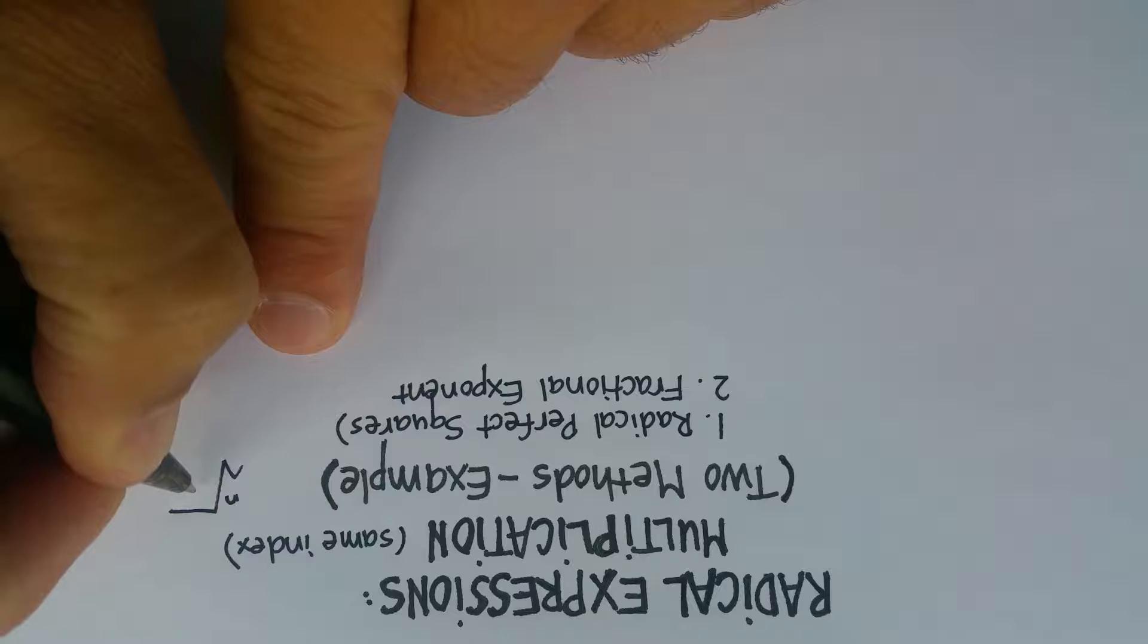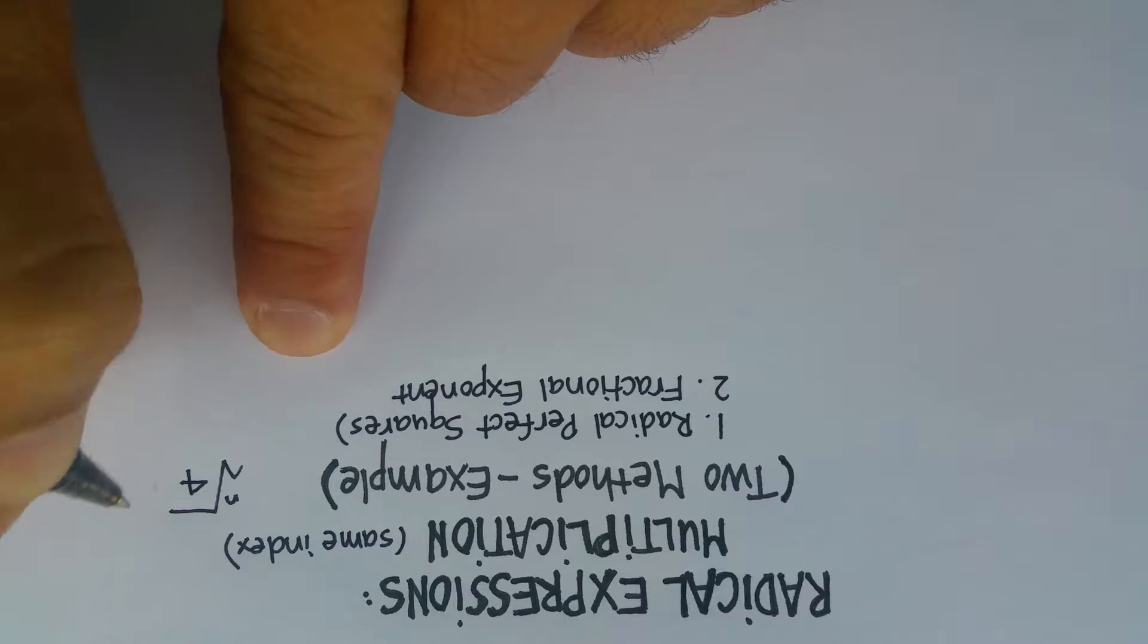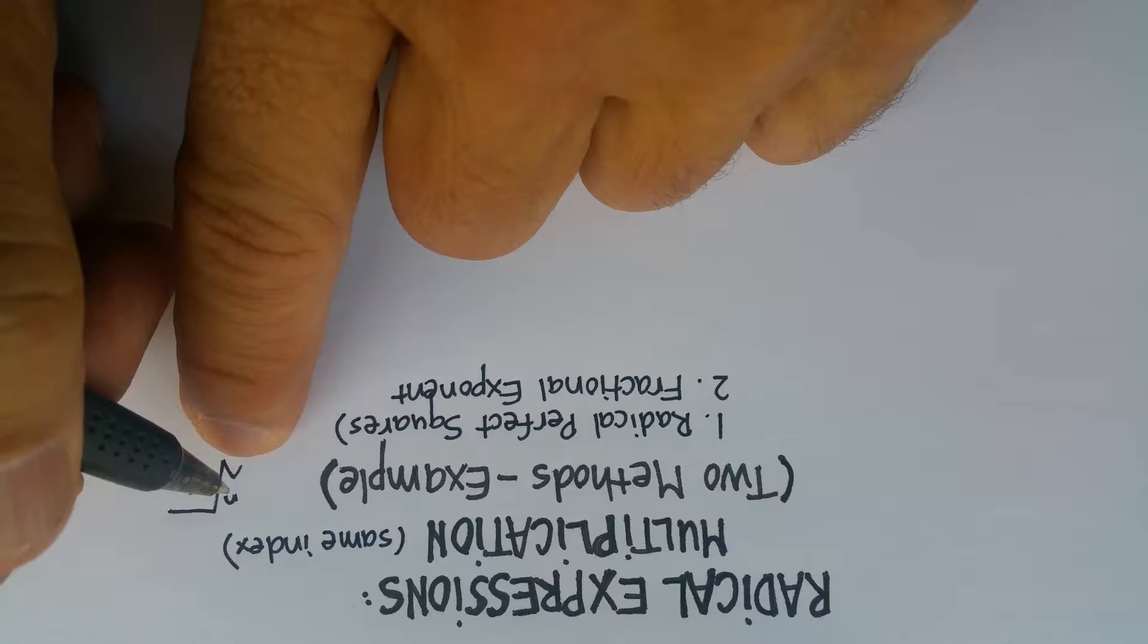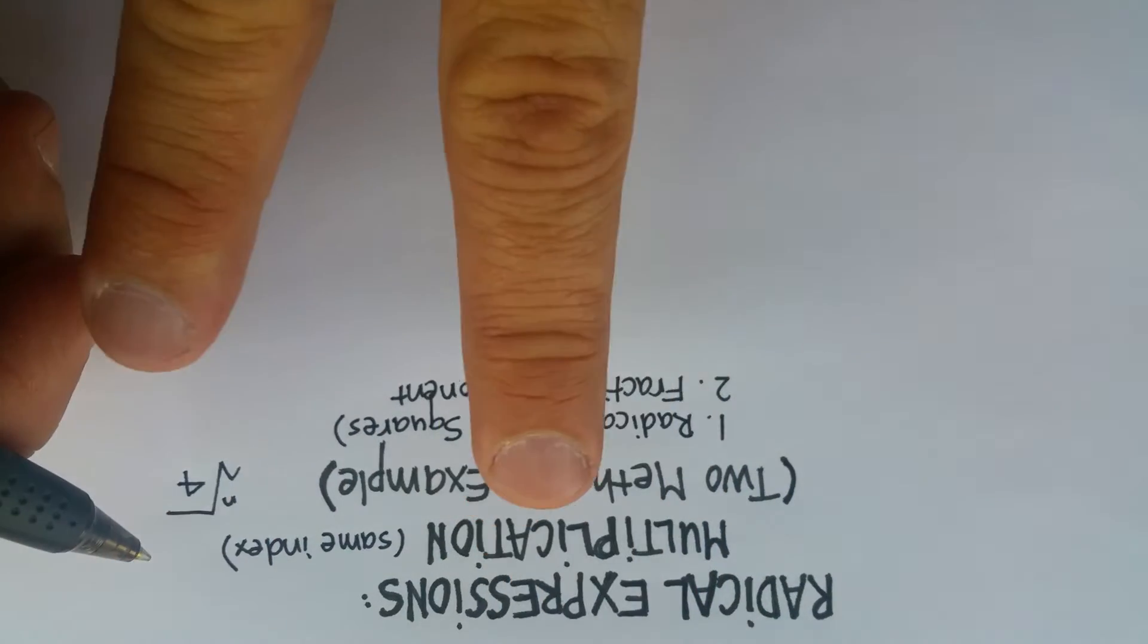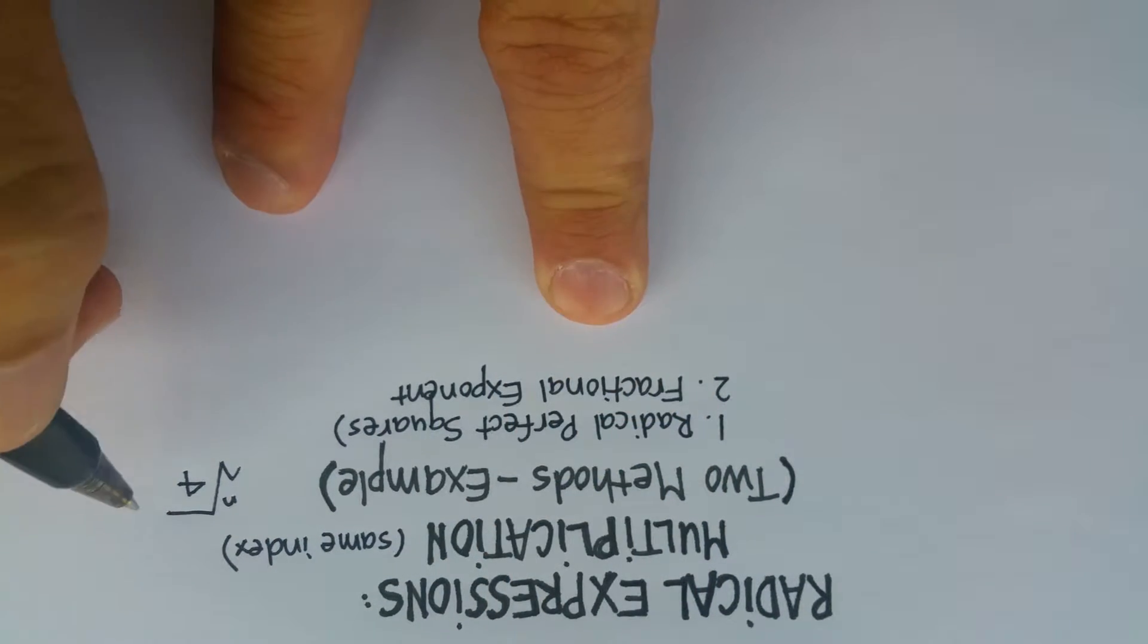So, for example, if I had something like the square root of 4, the square means that I'm looking for two roots, something times itself that'll give me 4.